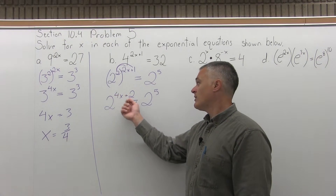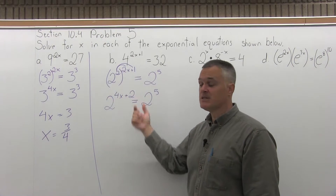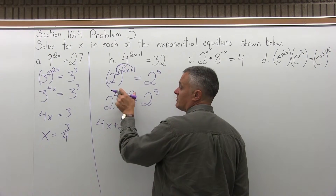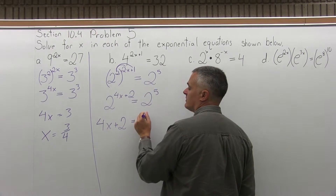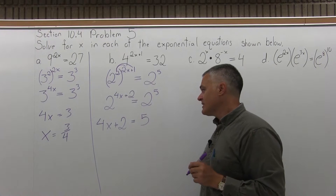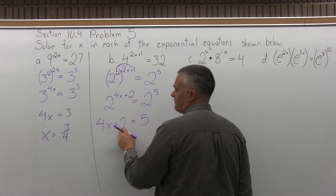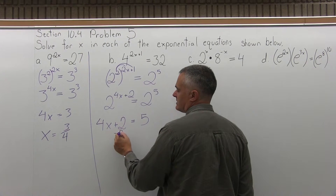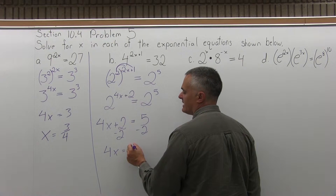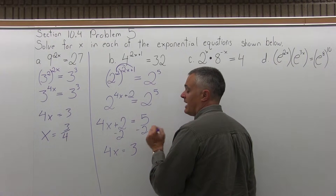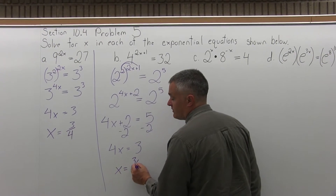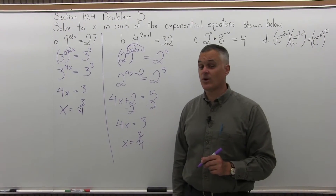Now I have 2 to some power equals 2 to some power, so the powers must be the same. Set the exponents equal: 4x plus 2 equals 5. To solve for x, subtract 2 from both sides to get 4x equals 3, then divide out the 4. x equals 3 fourths, just like part A — that's coincidental; the answer is not always 3 fourths.